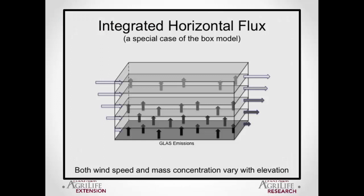Here's another candidate for an independent method that could hopefully be used to validate — or invalidate, as the case may be — the inverse dispersion modeling technique. This technique is really a glorified box model, known by its acronym IHF: Integrated Horizontal Flux. It's essentially a mass balance through a box sitting on top of the source area. If we take that box model and slice it horizontally to account for vertical variations in wind speed, direction, and particulate concentration, this represents a refinement of the box model that accounts for vertical variability — that is its major strength.